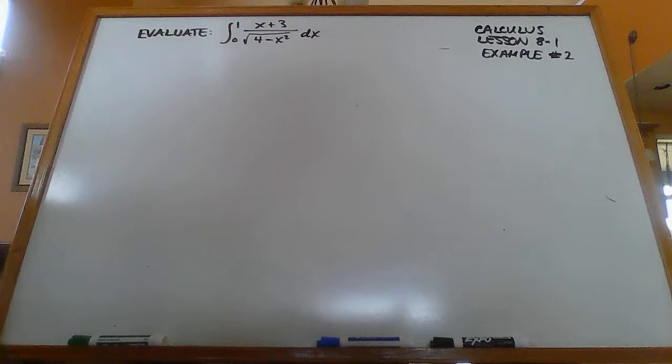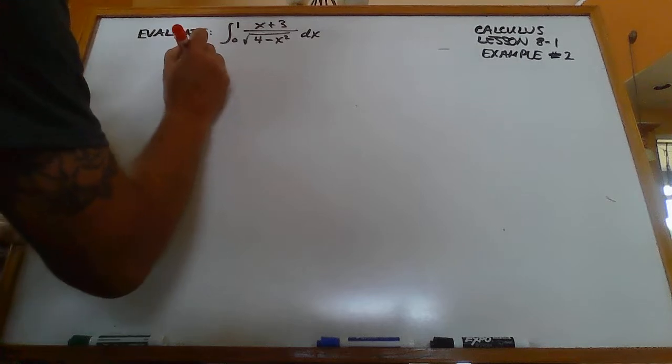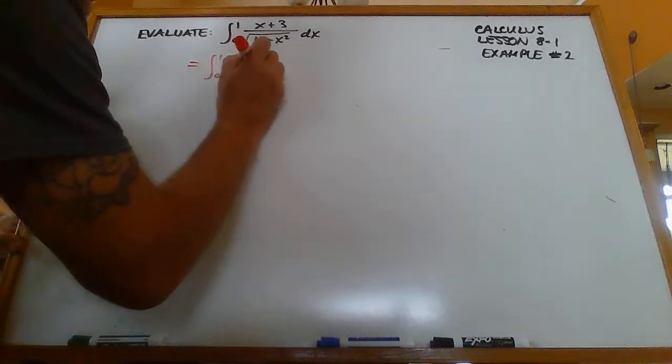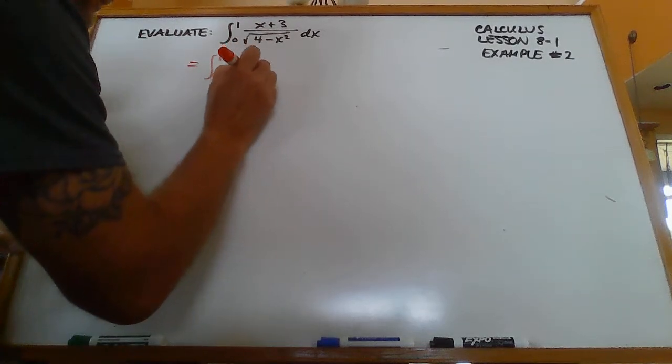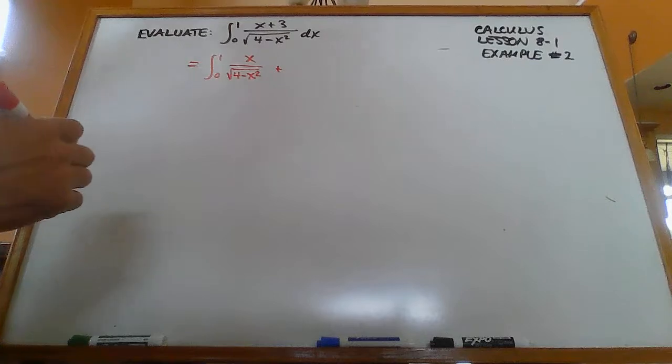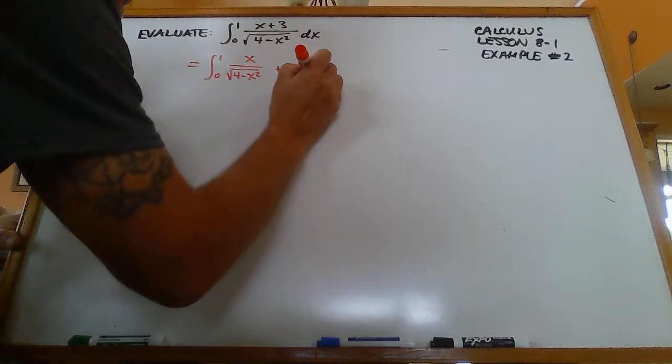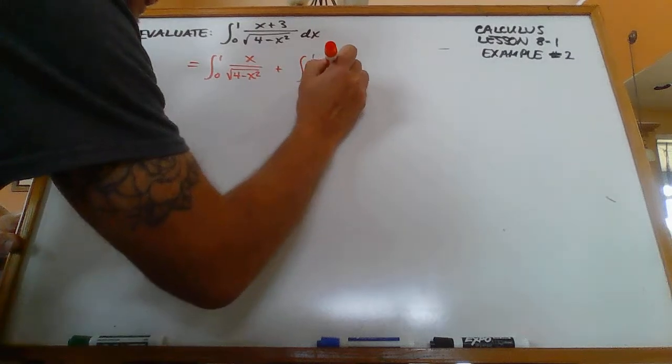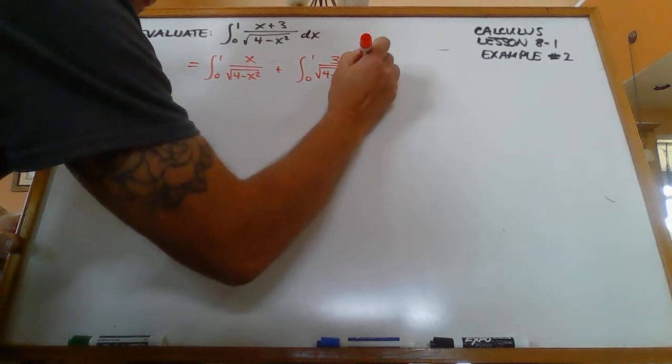The first thing that we're going to do with this is break this into two equations. So this is going to be equal to the integral from 0 to 1 of x over the square root of 4 minus x squared plus the integral from 0 to 1 of 3 over the square root of 4 minus x squared dx.